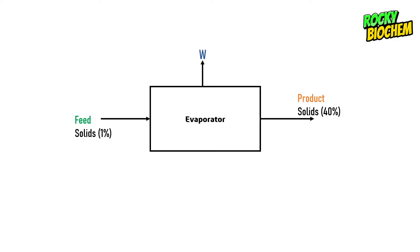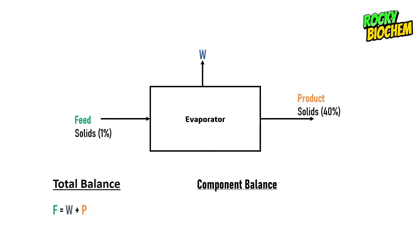To continue with the recap: for a simple evaporator system, the total balance equation is written as F = W + P. That is, the mass of anything entering the evaporator should equal the mass of anything exiting. F, the feed, points toward the evaporator, so it is on one side of the equal sign, and W plus P — water and product — are on the other side since they are moving out.